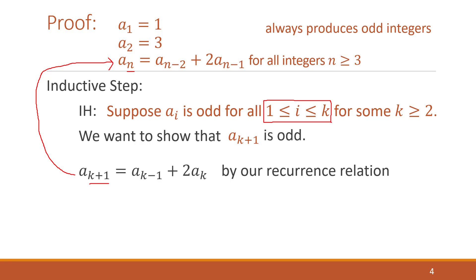Well, by our inductive hypothesis, both of these values, a of k minus one and a of k, both fit in that range, or k minus one and k fit in this range, which means that a of k minus one and a of k are both odd.